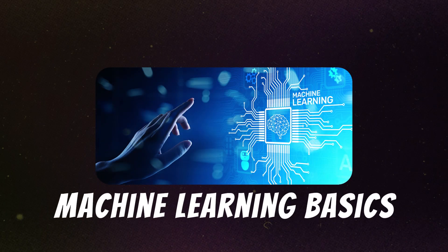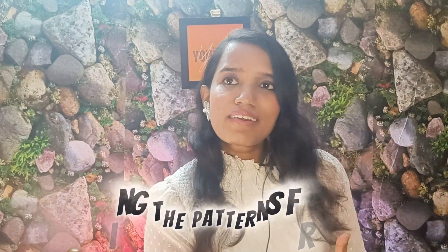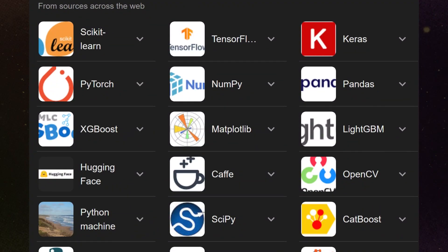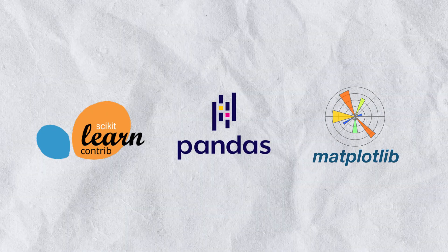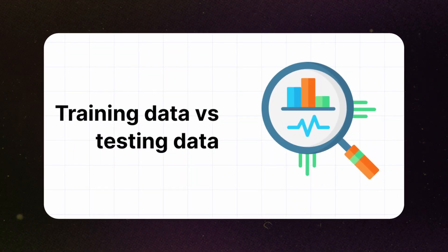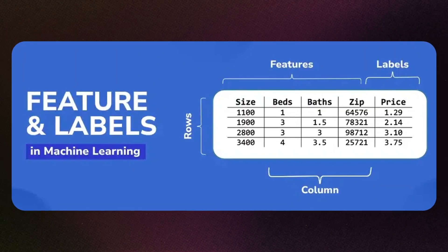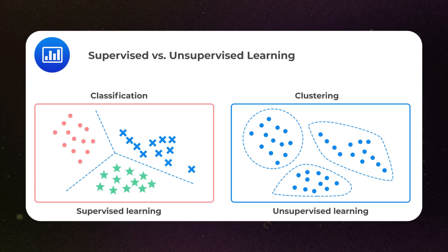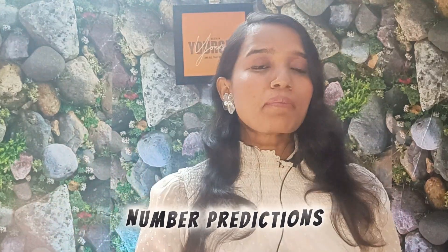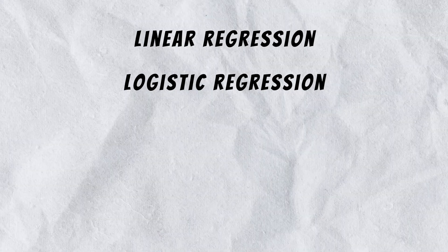Step number three: machine learning basics. Machine learning is about learning patterns from data. Key libraries include Scikit-learn, Pandas, and Matplotlib. Core concepts include training data versus testing data, features, labels, unsupervised learning, and supervised learning. You should also learn these algorithms: starting with linear regression, which helps with number prediction, then logistic regression, which is about binary classification.